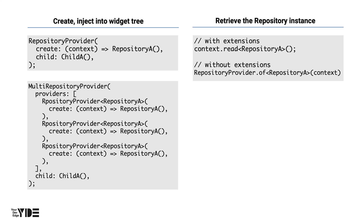Access to the repository provider can be done using the context.read extension method or using the repository provider's static method. If you need multiple repository providers, you can use multi repository provider for convenience. It is quite similar to multi bloc provider.